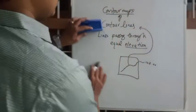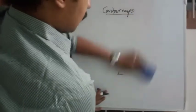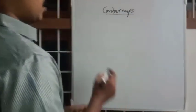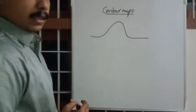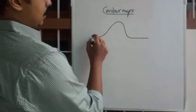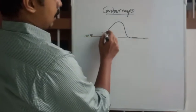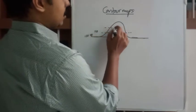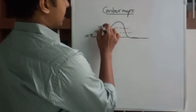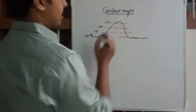So that is the core idea, and it is fairly easy to understand. Suppose this is a hill, and the elevation is 100 meters here, 110 meters here, 120 here, and 130 meters here.